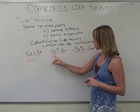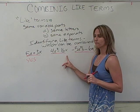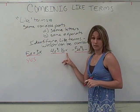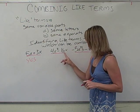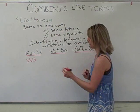Now here we have 4X squared minus 1 half X. Are these like terms? The X has a squared. This X does not. Because they do not have the same exponents, they cannot be combined.